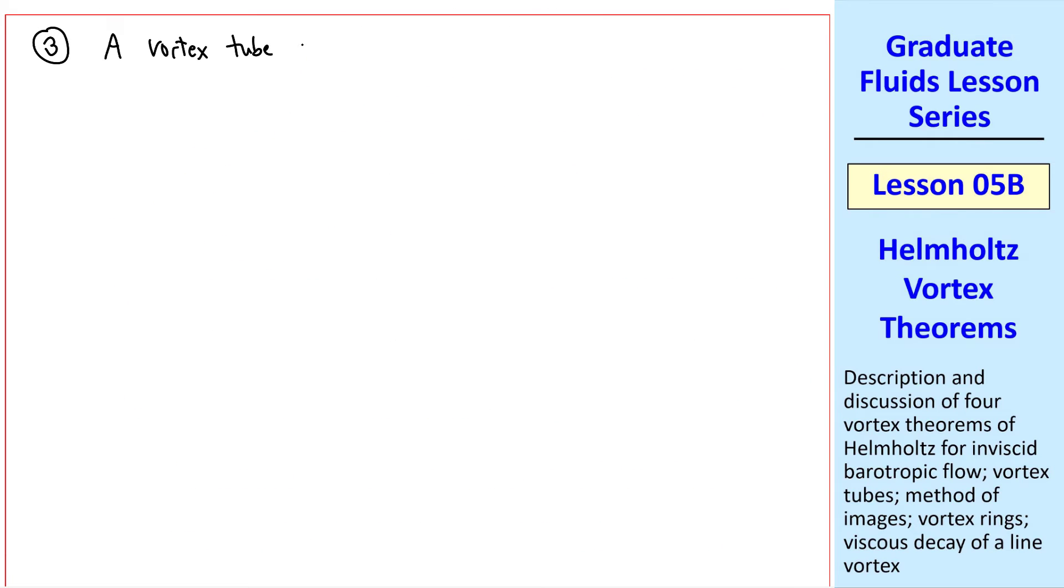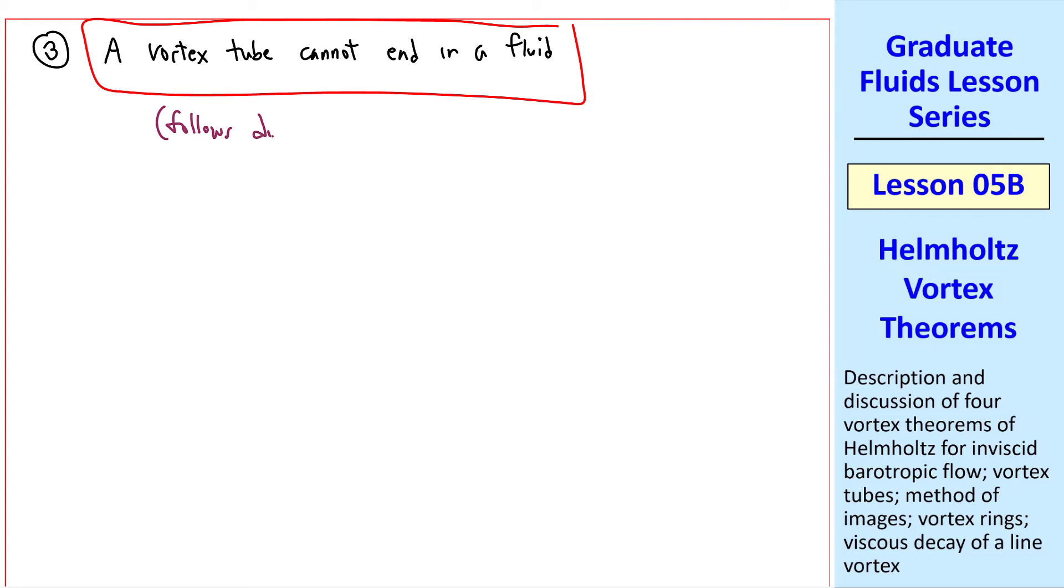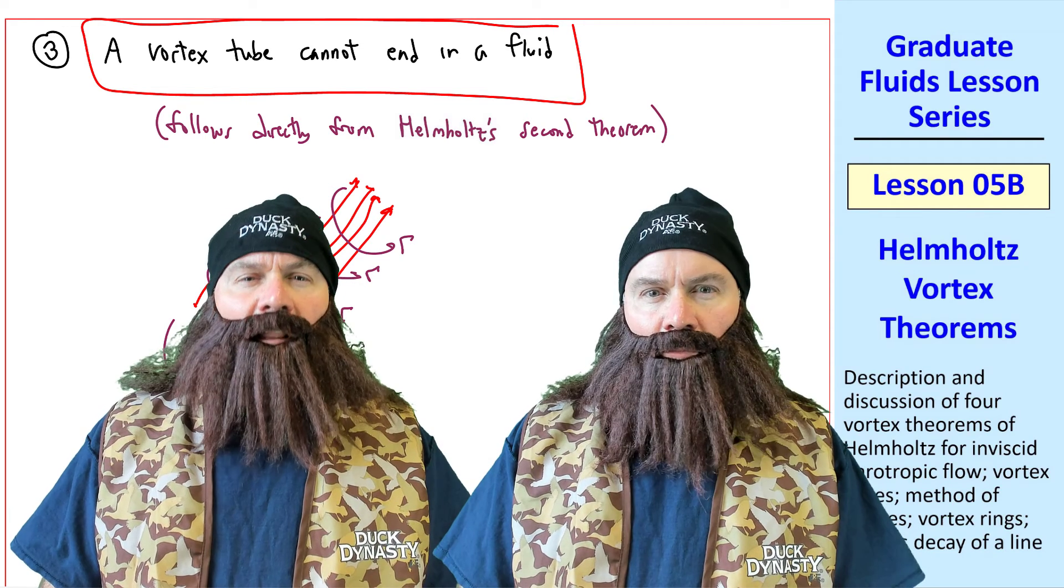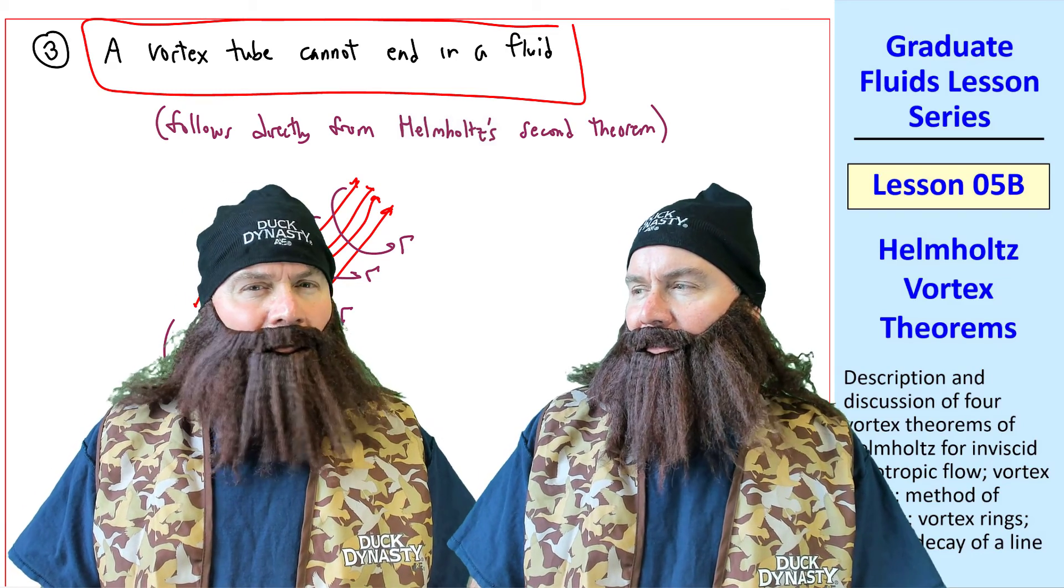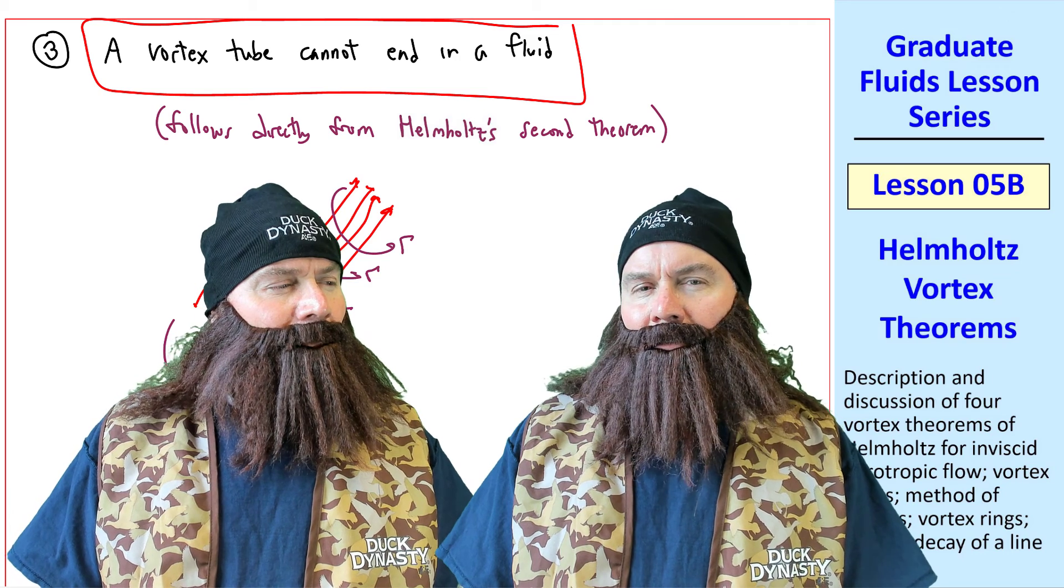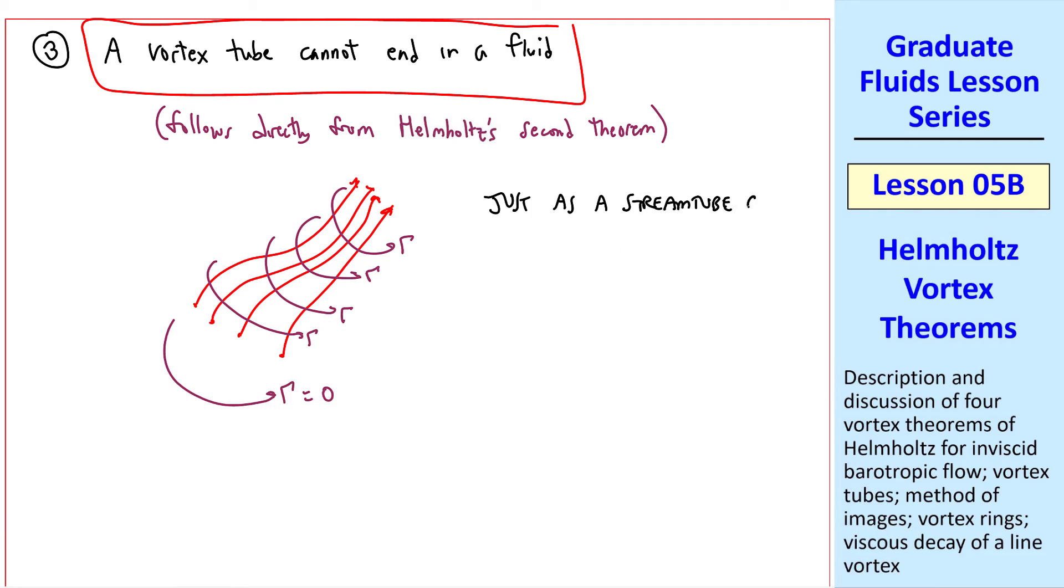Helmholtz's third theorem says that a vortex tube cannot end in a fluid. This follows directly from Helmholtz's second theorem. We know that gamma must be constant anywhere along this vortex tube. But what if this vortex tube just ended here? What's the circulation around this portion of the fluid? It would be zero because there's nothing there. Again, our analogy with a stream tube: just as a stream tube cannot end in a fluid because the mass would have to either appear or disappear, a vortex tube cannot end in a fluid. What would happen to the vorticity? It would have to just disappear.